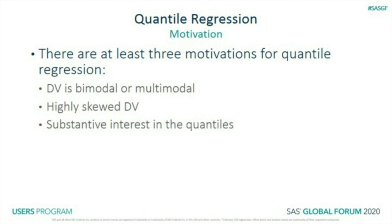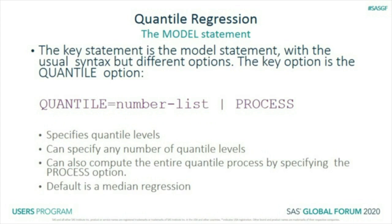Now let's get into the syntax. One key difference from the usual syntax is on the model statement: you have a quantile option. That number list can be any kind of list SAS accepts, or you can use PROCESS, which uses every possible quantile — that's every distinct value of the dependent variable. If you have a lot of observations and a non-rounded dependent variable, that could be a lot.